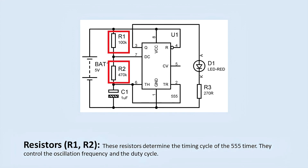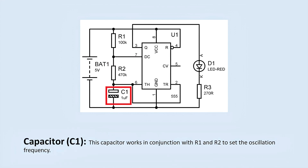Resistors R1 and R2: These resistors determine the timing cycle of the 555 timer. They control the oscillation frequency and the duty cycle. Capacitor C1: This capacitor works in conjunction with R1 and R2 to set the oscillation frequency.